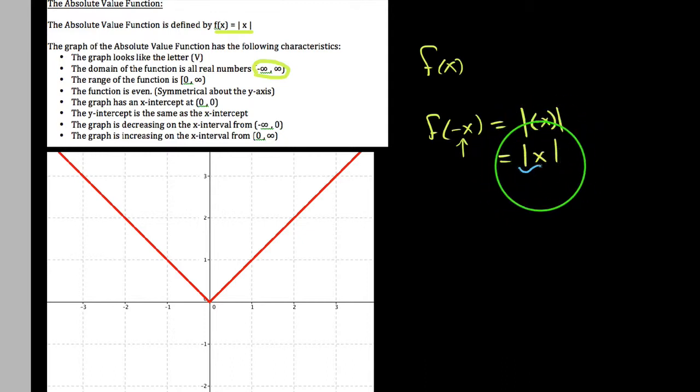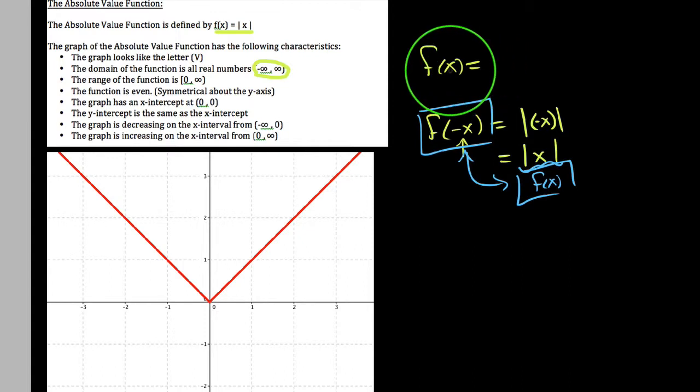And we already know that this is the original f of x that I started with in the first place, so this chain of logic would say that necessarily, f of negative x is the same thing as f of x, which is our definition of even functions.